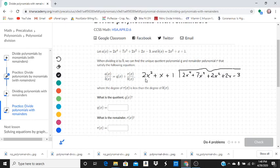We have to look, how many times does 2x squared go into 2x to the 4th? Well, it goes in x squared times. Because if we multiplied 2x squared by x squared, we would get 2x to the 4th.